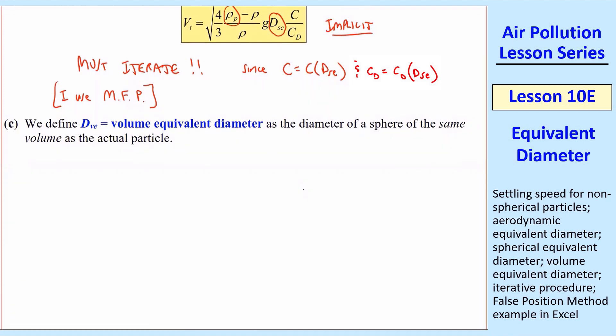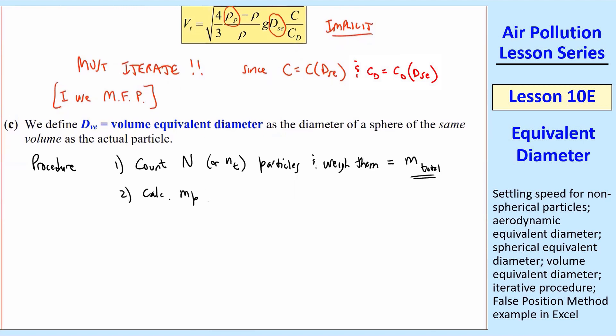The third one, I saved the simplest one for last. This is called volume equivalent diameter, dᵥₑ. It's the diameter of a sphere of the same volume as the actual particle. So the procedure: you count some sample of particles, n or little nₜ, that's the number of particles, and you weigh them, take their mass, so you have some total mass. Calculate mₚ, which is the average mass per particle. That would be m total divided by n or nₜ. Then we calculate vₚ, which is the average volume per particle, and that'll just be mₚ, mass per particle, over ρₚ. And we're using the actual density of the particle there. If you had some other way to measure particle volume, you could do that as well. But this is how it's usually done.